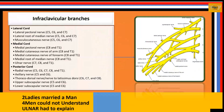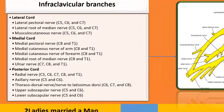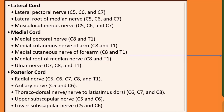We'll start with a summary of all branches from the three cords. The lateral cord has three branches: lateral pectoral nerve, lateral root of median nerve, and musculocutaneous nerve. The medial cord has five: medial pectoral nerve, medial cutaneous nerve of arm, medial cutaneous nerve of forearm, medial root of median nerve, and ulnar nerve. The posterior cord also has five: radial nerve, axillary nerve, thoracodorsal nerve (also called nerve to latissimus dorsi), upper subscapular nerve, and lower subscapular nerve.